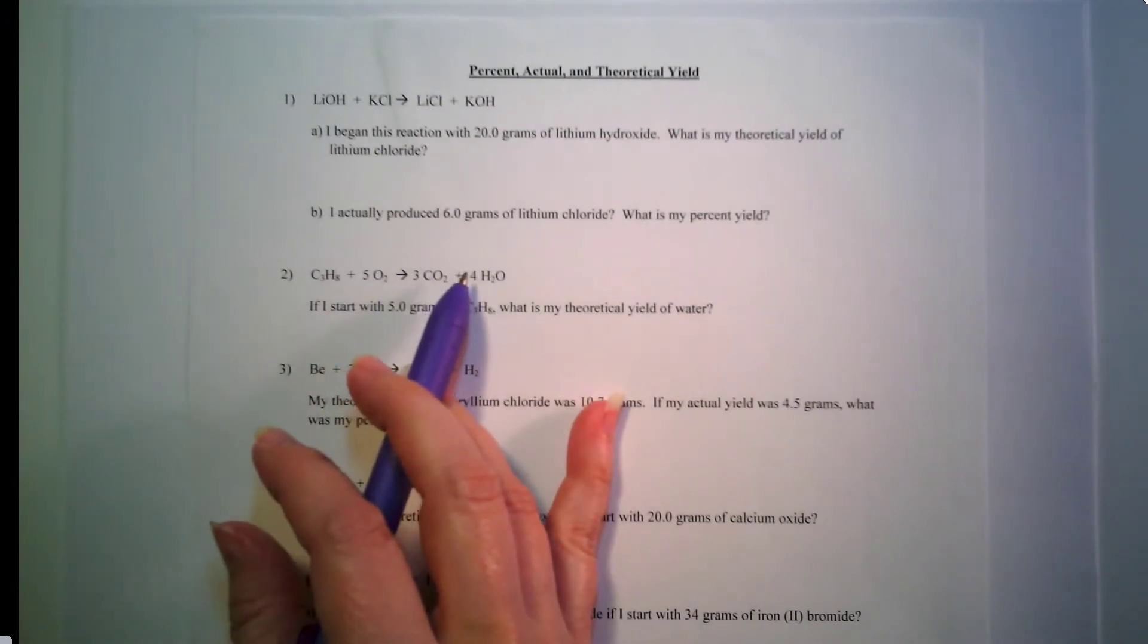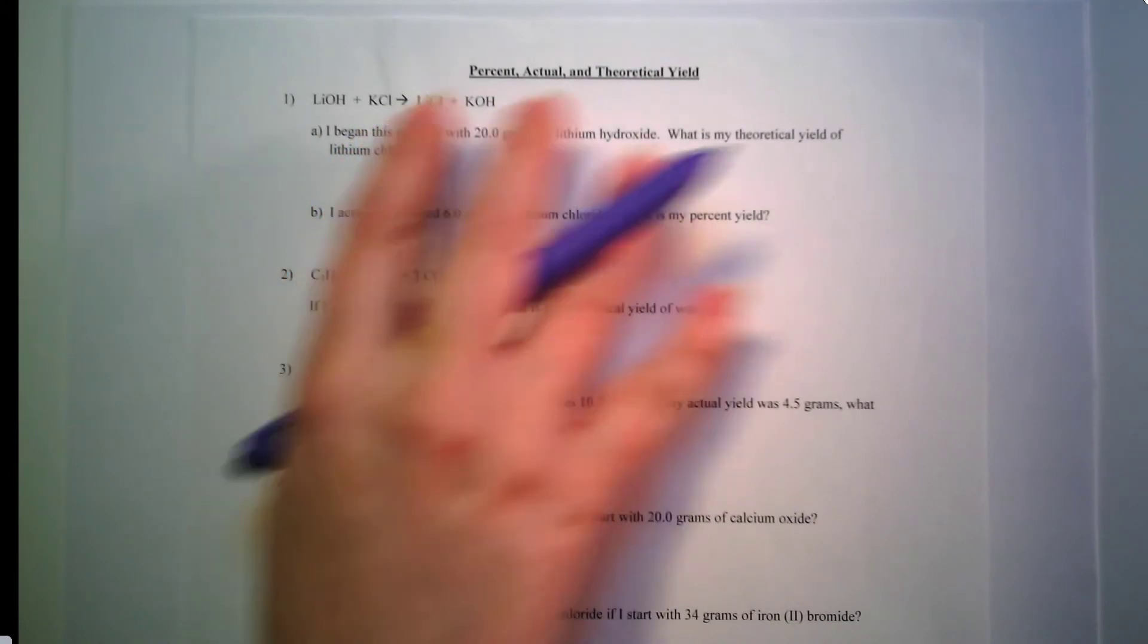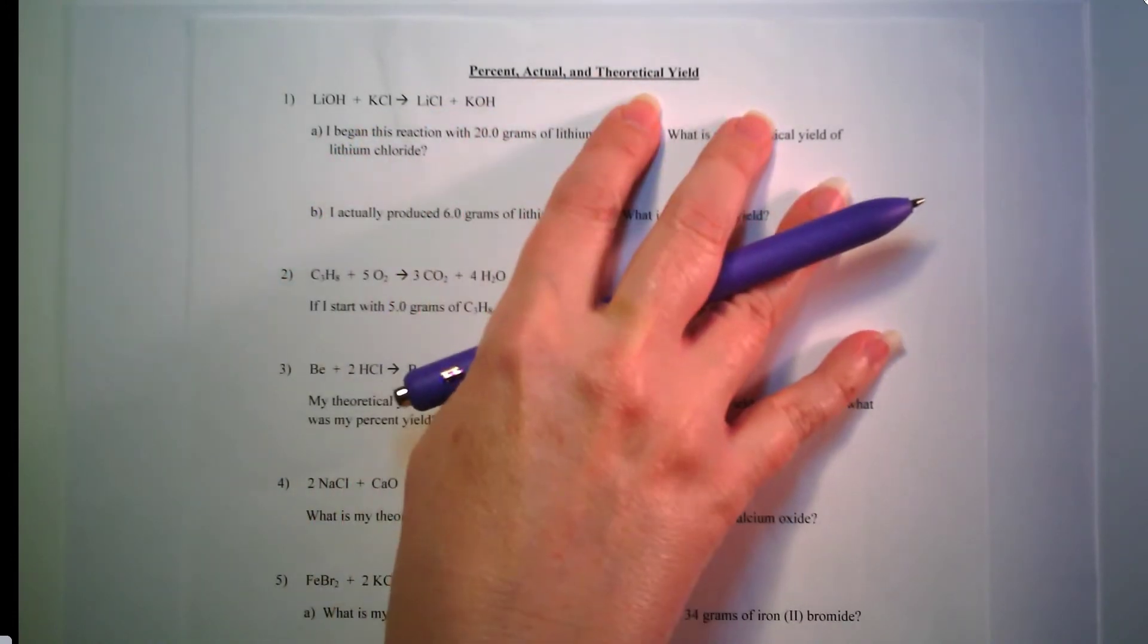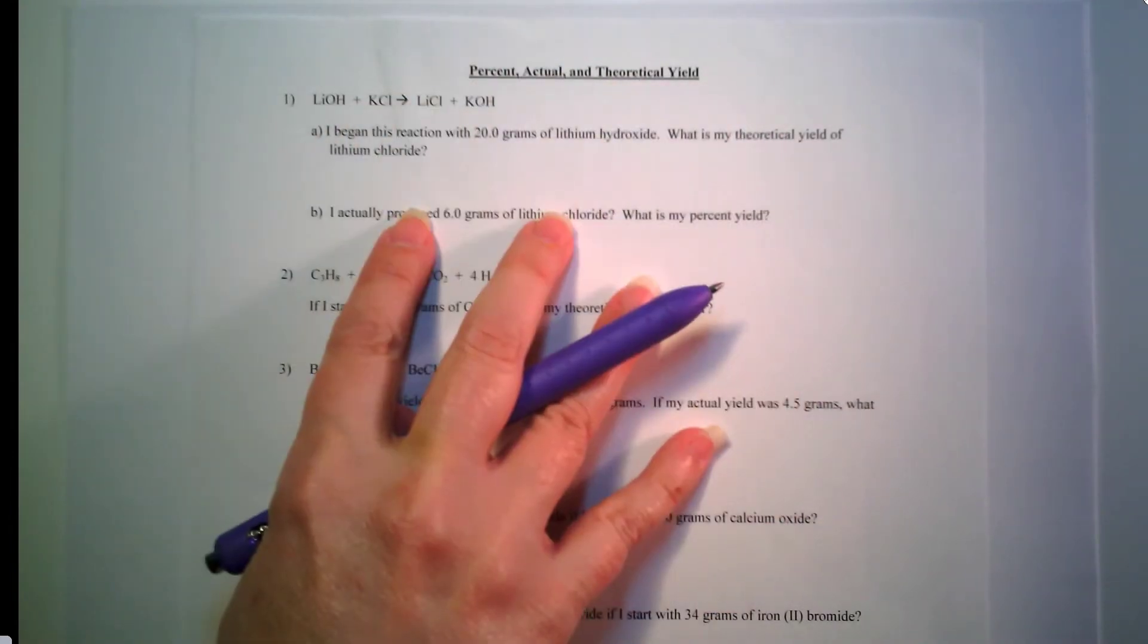You can print if you have a printer. If you don't, just pull it up on your phone or your computer. You can just solve on another piece of paper. In this video I am going to be going through the basics on what percent actual and theoretical yield are and we are going to solve problem number one.